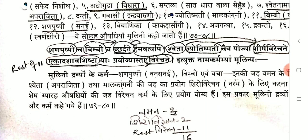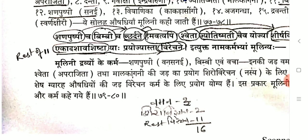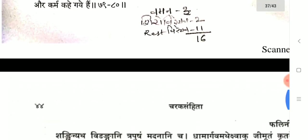Shveta and Jyotishmati are used for Shirovirechana — note that Shirovirechana is a synonym for Nasya karma. The rest of the 11 among the 16 are used for Virechana. Number is not directly mentioned for Vamana and Nasya, but indirectly: 3 drugs among the 16 are for Vamana, 2 are for Shirovirechana/Nasya, and 11 are for Virechana. This is important to remember.